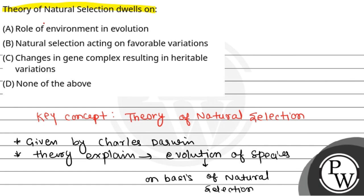Now, the environment is influenced by natural selection, but the theory of natural selection focuses on how variations within species are acted upon. So option A, just the environment, is incorrect.